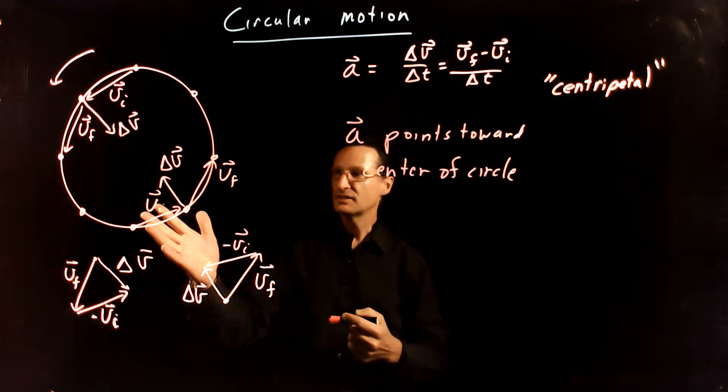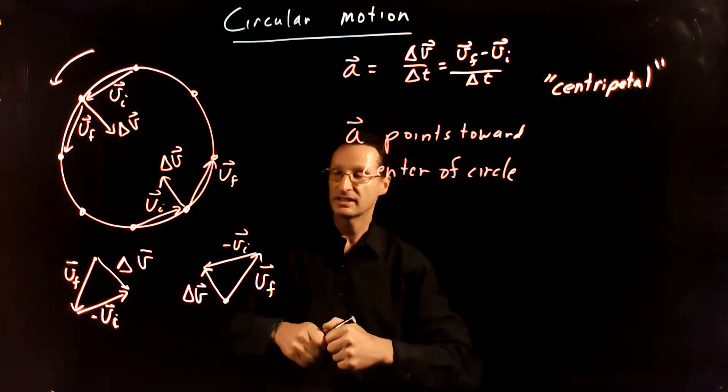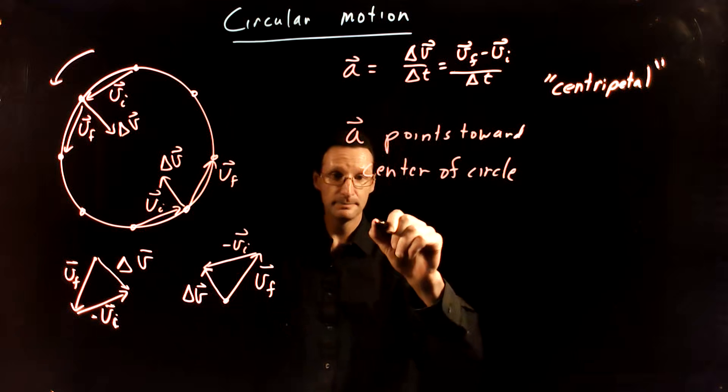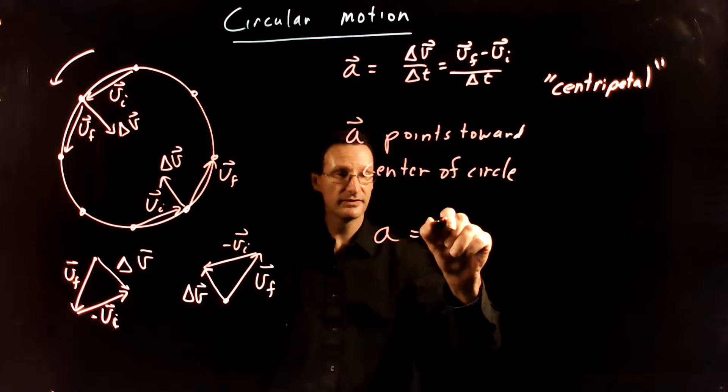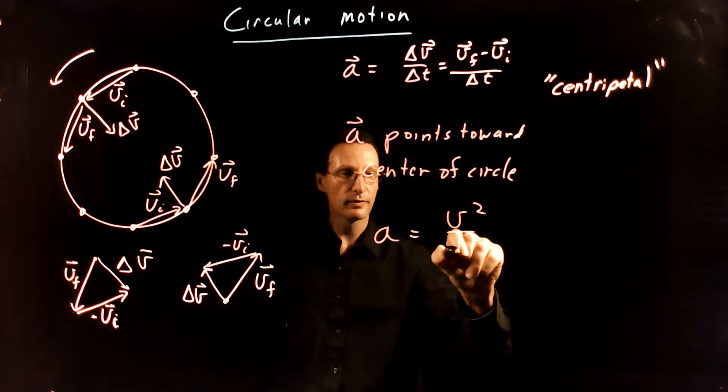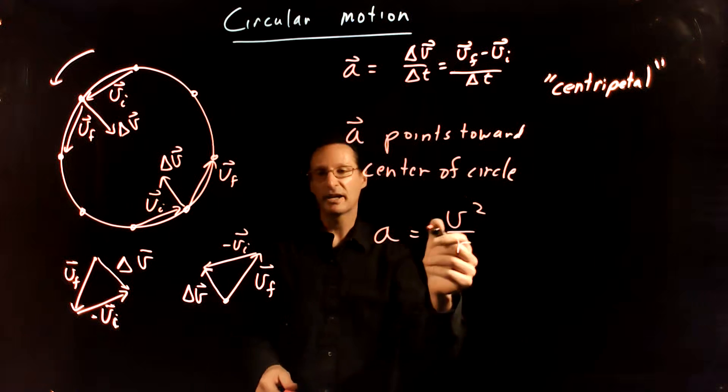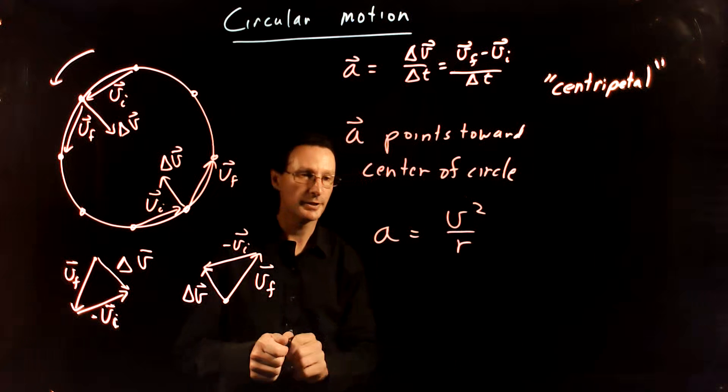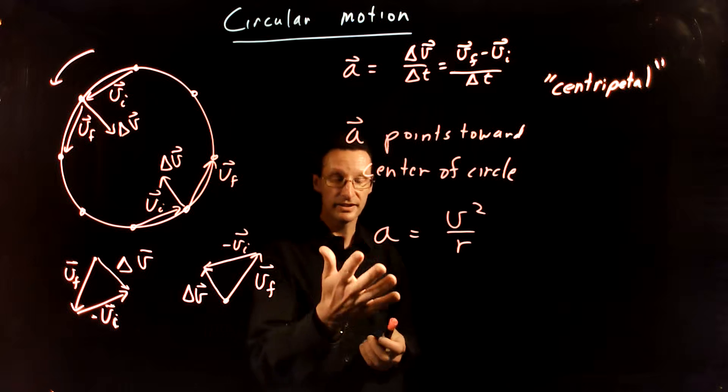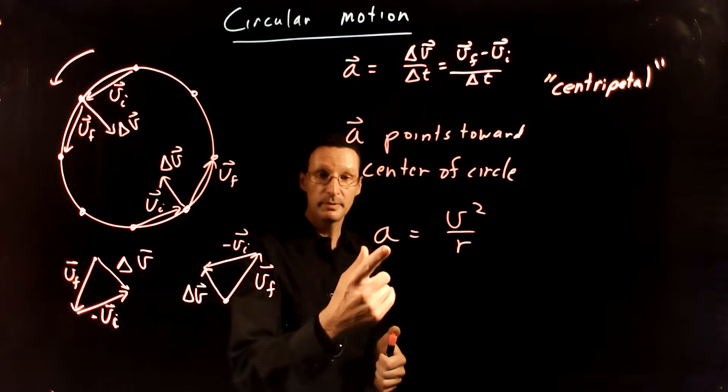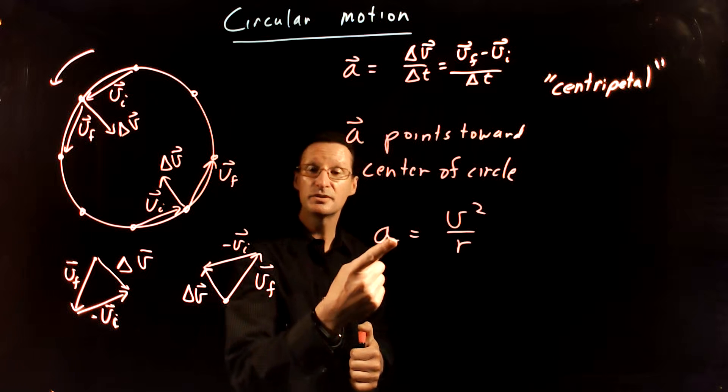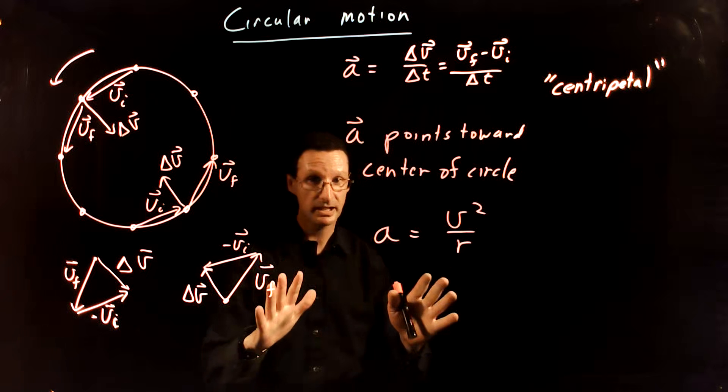The magnitude of this acceleration, if it's traveling at constant speed, is just given by v squared over r. And so I'm not going to derive this in this video here, but this is a useful thing to know. Keep in mind, this is acceleration due to direction change only, not a speeding up or a slowing down.